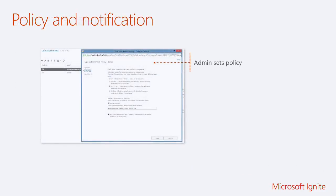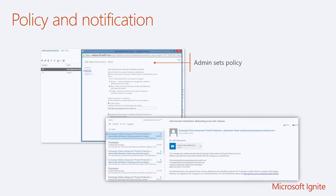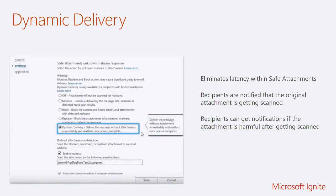ATP is actually pretty simple. You go into the security and compliance center and define a policy for advanced threat protection. The options are fairly basic. Once you turn it on, you say what do you want to do with the file - do you want to block, monitor, or take the attachment out, essentially delaying delivery while the attachment is being scanned. You can set where the alert goes - if a user receives the file, do you want to notify the administrator? And users get notifications as well. We also have dynamic delivery, which was recently added to the product.